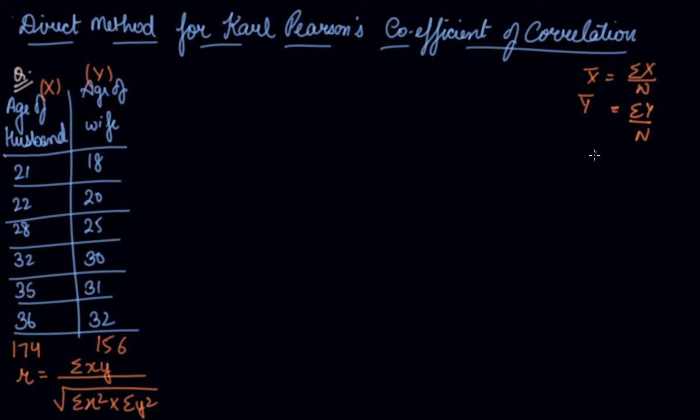The number of observations are 6. So x bar is 174 divided by 6 which comes out to be 29, and y bar is 156 divided by 6 which comes out to be 26.